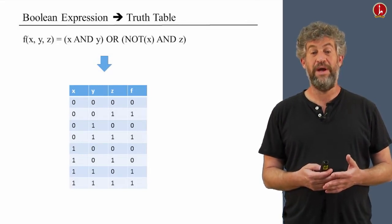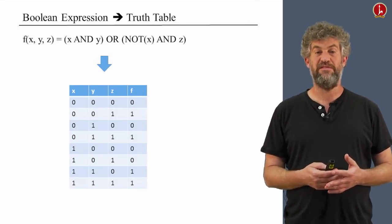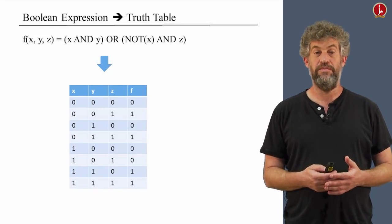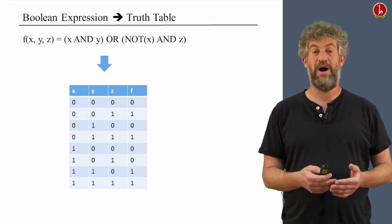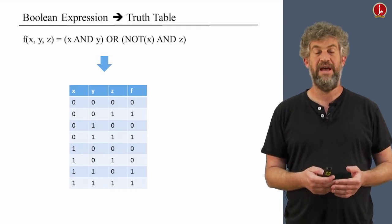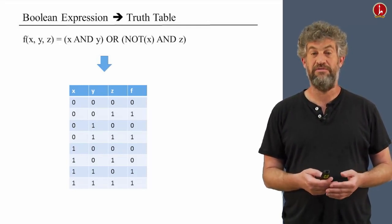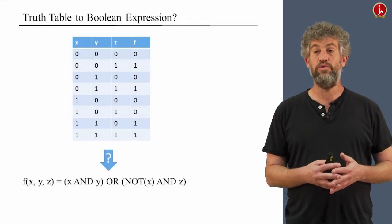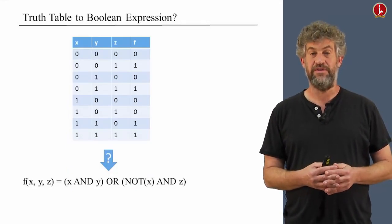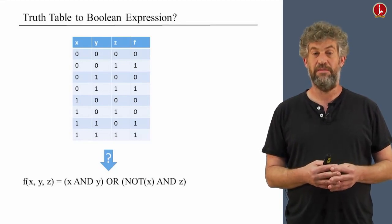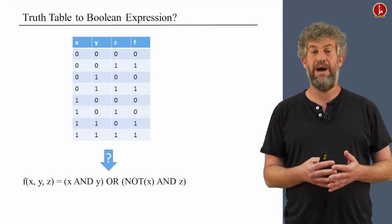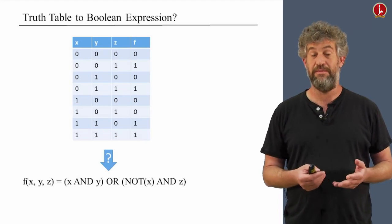We already know how to go from the expression to the truth table. You take the expression, evaluate it for each possible value of the input bits, and then you can fill the truth table. What we want to do now is exactly the opposite. You start with a description of a function, let's say given as a truth table, and our challenge is to come up with a formula that computes the same Boolean function.